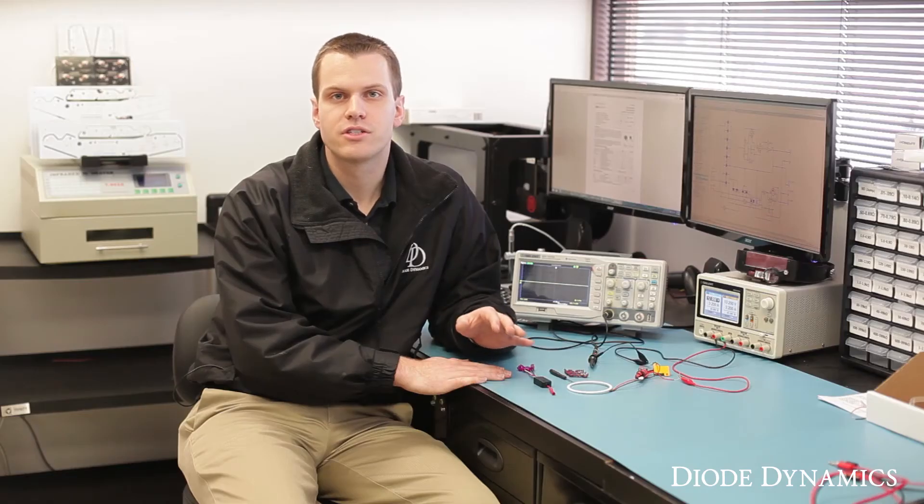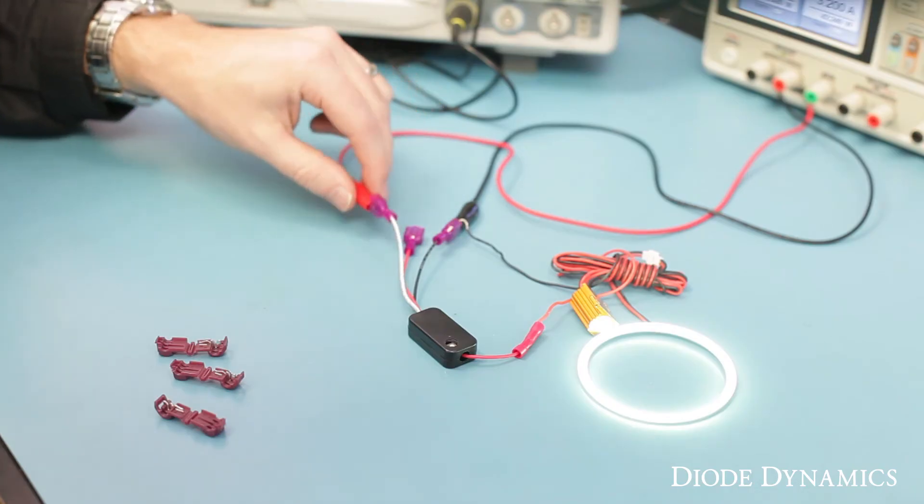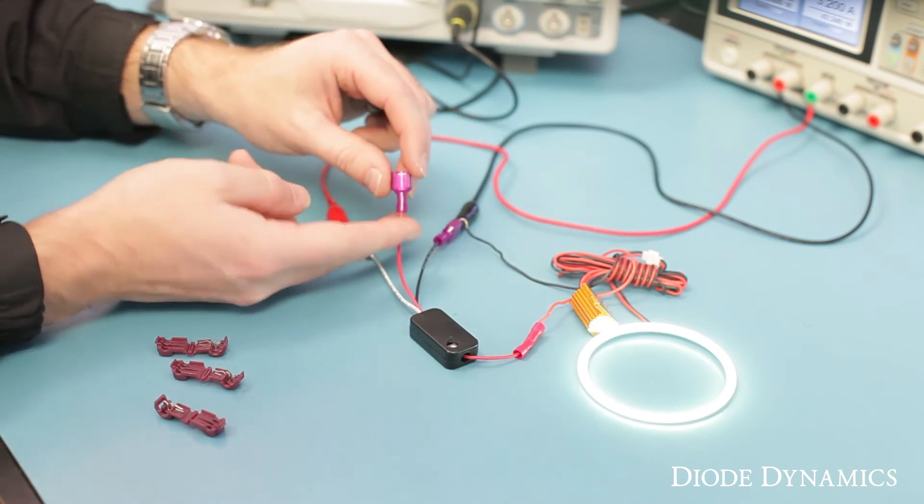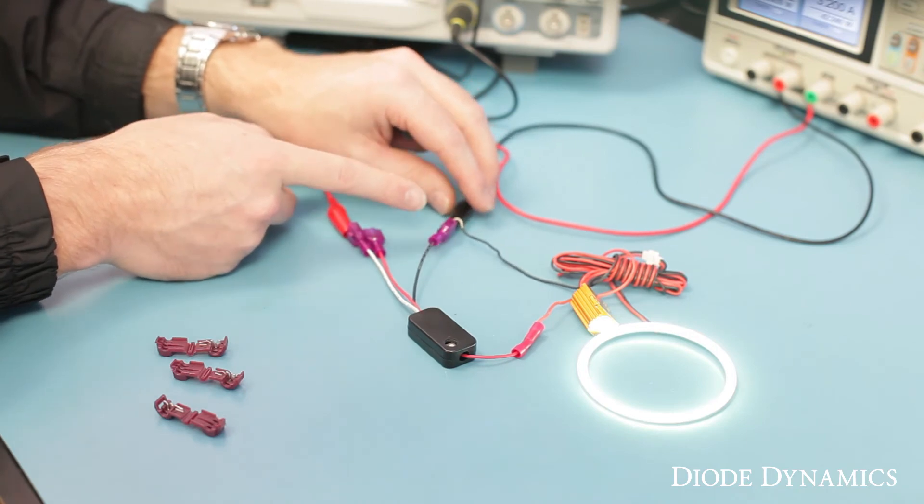Unlike most other dimmers, it works with common ground, so it's easy to use anywhere in your vehicle. To use it, just connect the white wire to your low 12-volt signal, connect the red wire to your high 12-volt signal, and connect black to any ground.